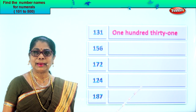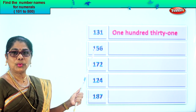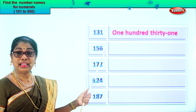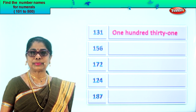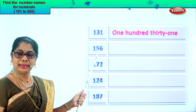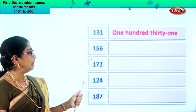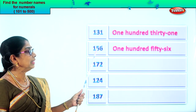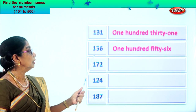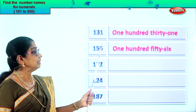Look at the next numeral. You have hundreds place one, tens place five, and one in the ones place. Read it aloud: one hundred fifty-six. That's all. So you write one hundred, then you write fifty-six — fifty and six. So one hundred fifty-six.